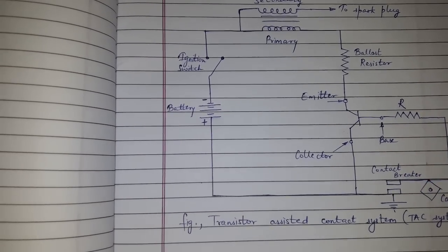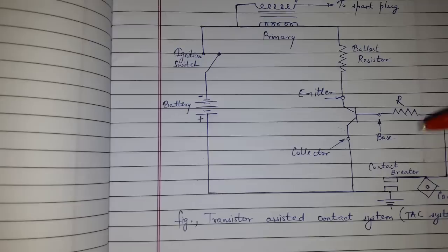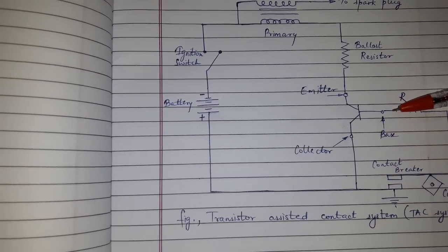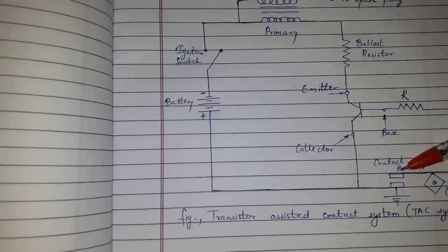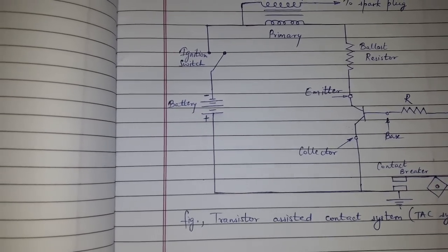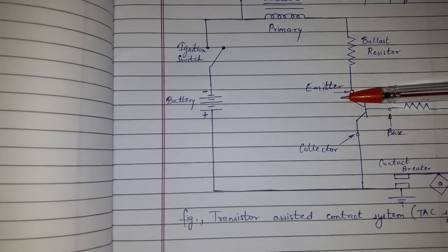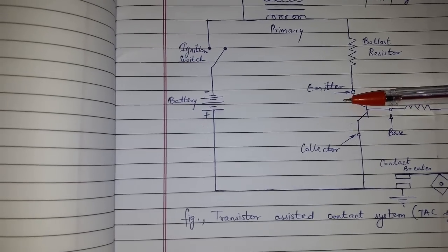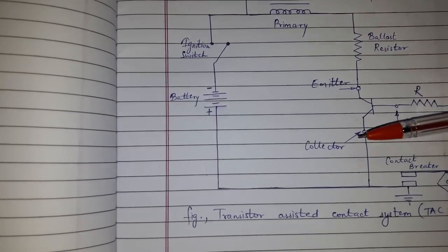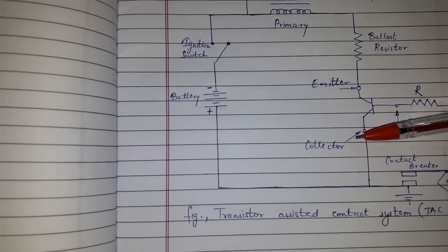Working: When the contact closes, the base is drawn to the low side, that is ground, and the transistor switches on. The emitter of the transistor will be connected to the primary winding. The collector will be connected to the ground.